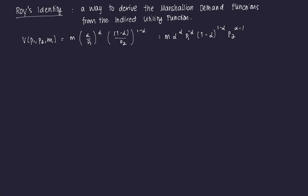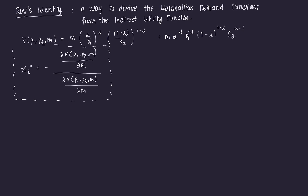In this video, we're going to use something called Roy's identity. Roy's identity is a way to recover or to derive the Marshallian demand functions from the indirect utility function. The way that we do that is we use the identity specified as Xi star — corresponding to some Marshallian — that's equal to negative of the partial of the indirect utility function with respect to a particular good's price, say P1, all over the derivative of that indirect utility function with respect to income M. So this is our form for Roy's identity.